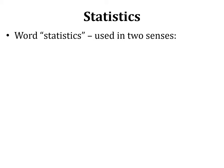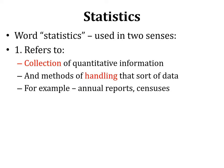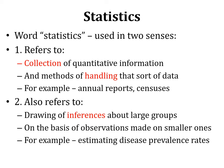The word statistics is used in two senses. The first refers to the collection of quantitative information — information which can be presented in numbers — and the methods of handling that data. For example, annual reports and censuses involve collecting quantitative information and then handling it: arranging and describing it in the form of tables, graphs, or percentages. This is one sense of the word statistics.